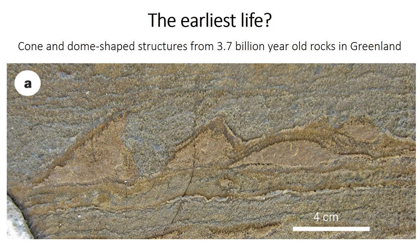So let's go to Greenland, 3.7 billion years ago. The rocks there formed on the ocean floor, making them the oldest rocks that we know of that formed in the ocean. This makes them very important for studying early life, because scientists think life first evolved in the ocean. But these rocks have since been heated and stretched and squished a lot. They do contain small cone and dome shaped structures that are a few centimeters tall. Are these stromatolites?